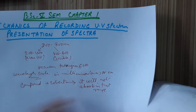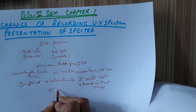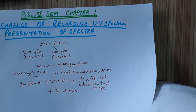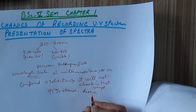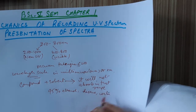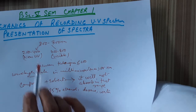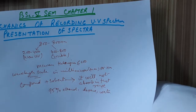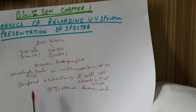Commonly used solvents are 95% ethanol, hexane, and water, since they will not show any absorption in this range, that is from 200 to 800 nanometers.